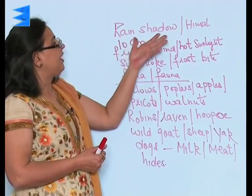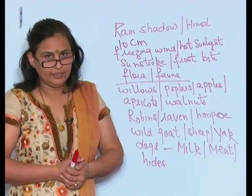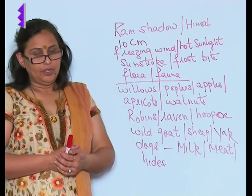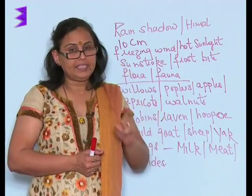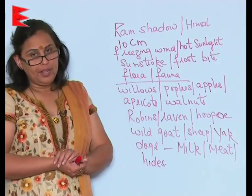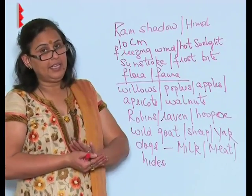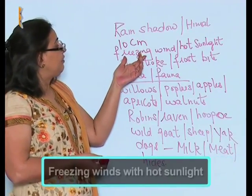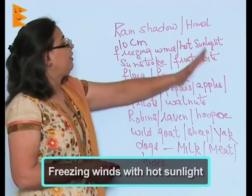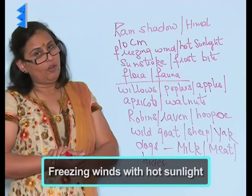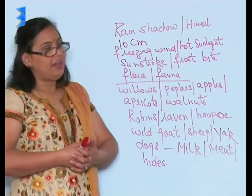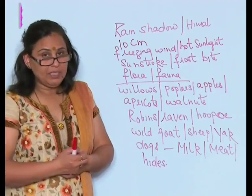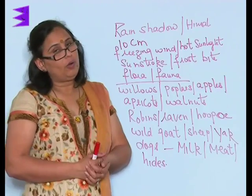Ladakh falls in the rain shadow area of the Himalayas, so it gets very less rainfall — almost 10 centimetres a year. As mentioned at the beginning of the chapter, one characteristic of deserts is very less rainfall. There are freezing winds here, along with hot sunlight — that is the characteristic of Ladakh. Which means you can have a sunstroke and a frostbite at the same time. That is the extremity of the cold desert called Ladakh.